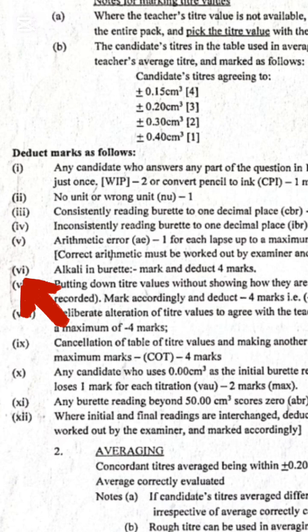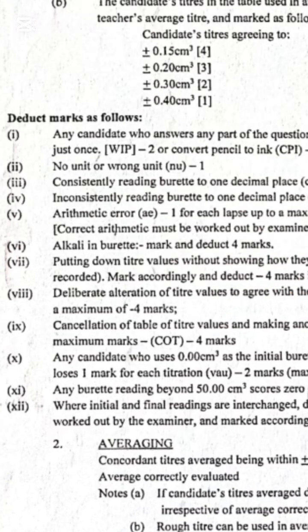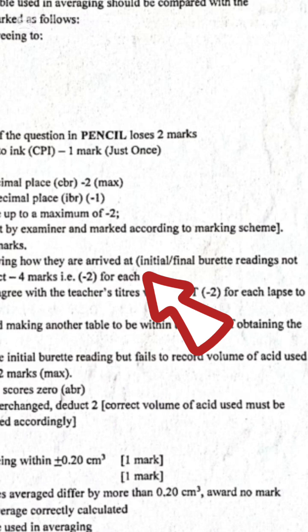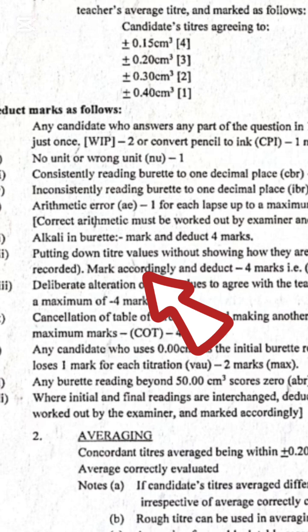Number six: unclear burette reading — that is minus four marks. Number seven: putting down titre values without showing how they are obtained — that is, when the candidate puts down titre values without showing the initial or final burette readings. We are told to mark accordingly, and it is minus four marks.